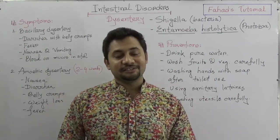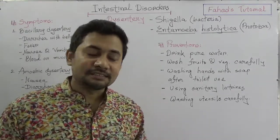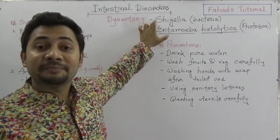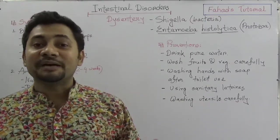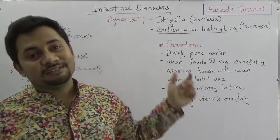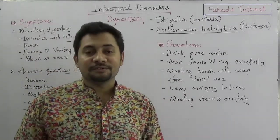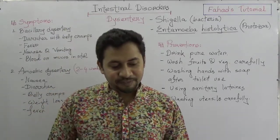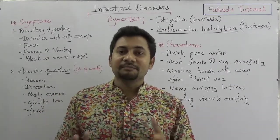Let's talk about an intestinal disorder which is Dysentery. Dysentery is an infectious disease caused by two types of organisms: the bacteria Shigella, which causes Shigellosis, also called Bacillary Dysentery, and the protozoa Entamoeba histolytica, which causes Amoebic Dysentery. Dysentery is an infectious disease of the intestines that leads to diarrhea with mucus and blood in the stool.